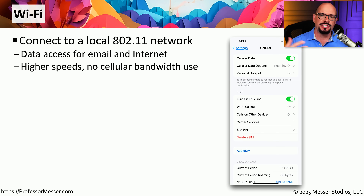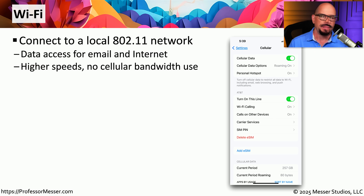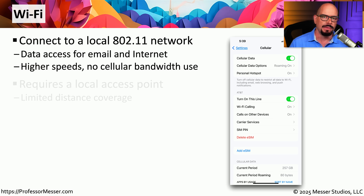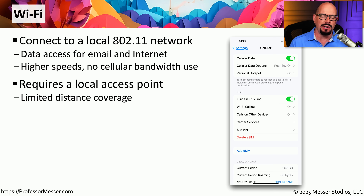Just as our cellular technologies have increased in speed and function, we have also had similar increases with 802.11 wireless. These are high-speed 802.11 networks that we commonly use at home and in our offices, allowing very high-speed throughput without any wired connection. These do have a limited range, however, and we have a local access point that everyone connects to in order to gain access to the 802.11 network.